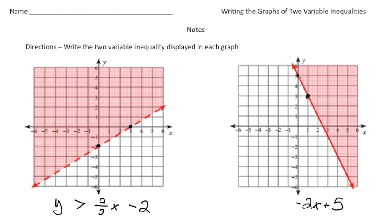This time we're going to have a solid line, so that means it's going to be either greater than or equal to or less than or equal to, and because we're shading above the line, it's going to be greater than or equal to. So y is going to be greater than or equal to negative two x plus five.